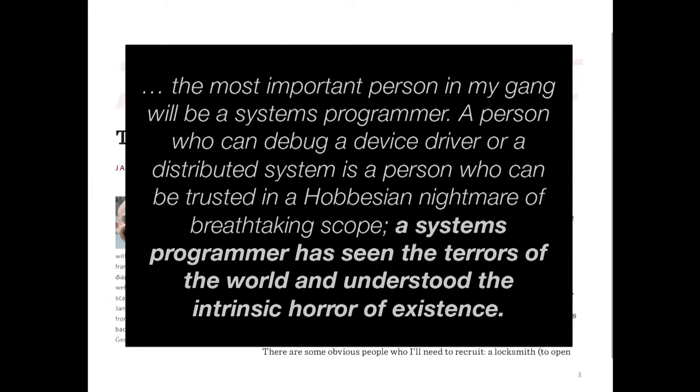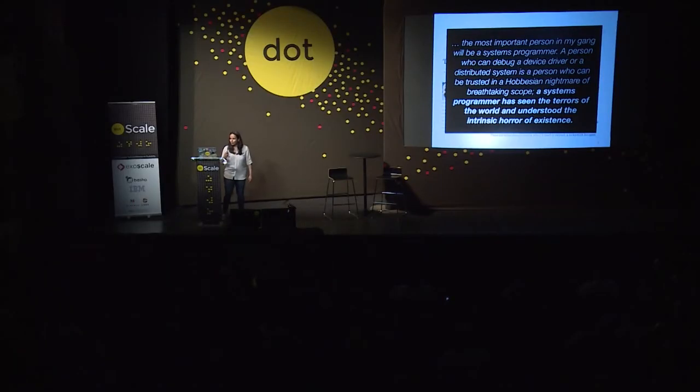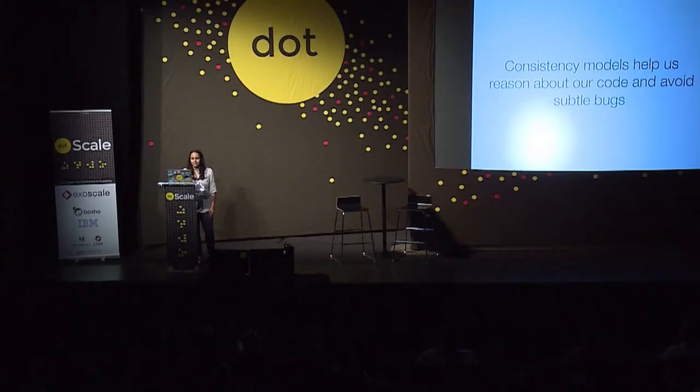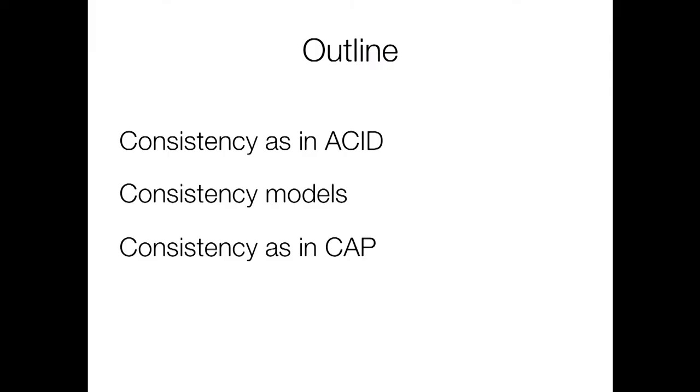"A systems programmer has seen the terrors of the world and understood the intrinsic horror of existence." I love this quote. What I want to say here is that we have a tool to address some of these problems — to address the Hobbesian nightmare and deal with the intrinsic horror of existence. And that tool is a consistency model. Consistency models help us reason about our code and avoid subtle bugs. In this talk, I'm going to talk about that word consistency and what it means in three different contexts.